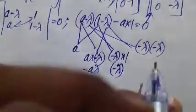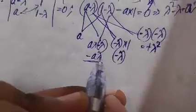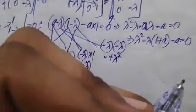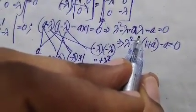When multiplying the two lambda terms, both have the same sign, giving a positive lambda squared. Now let us collect all terms: lambda squared, minus lambda, minus a times lambda, minus a, equals 0. Taking lambda as common gives lambda times (1 plus a), minus a equals 0.